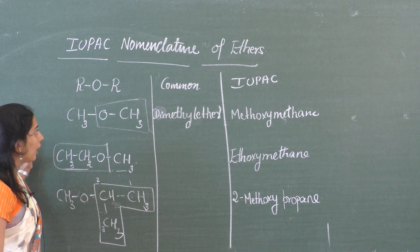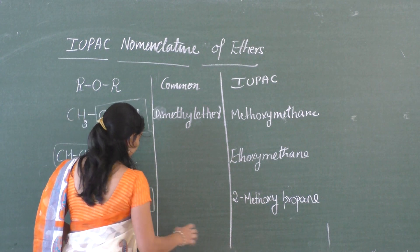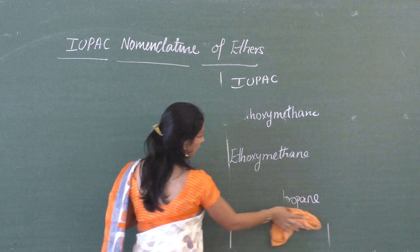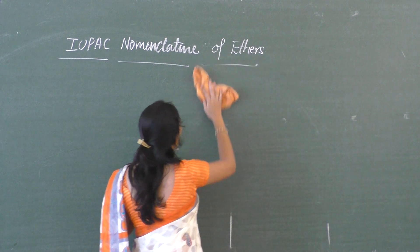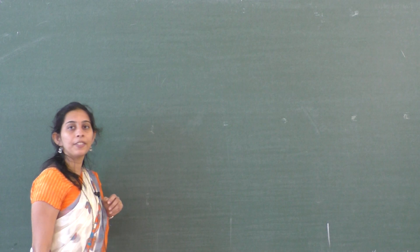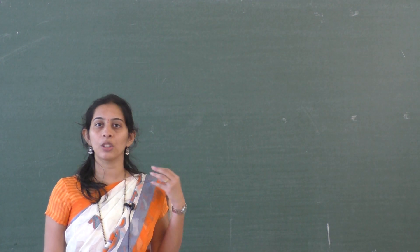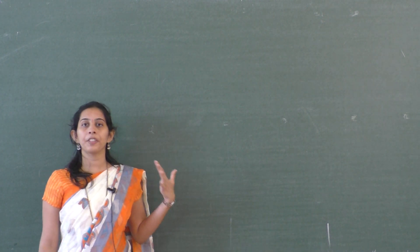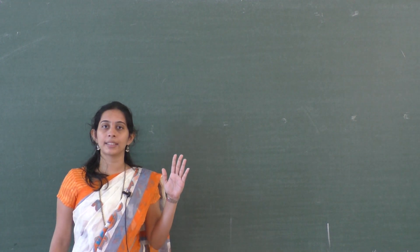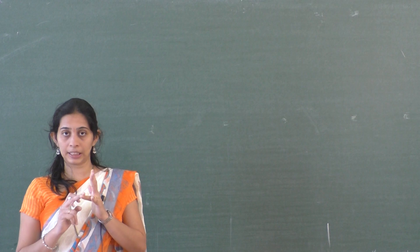This is how to name an organic compound which has ether as a functional group. Now we will move on to some physical properties and how they vary when you compare ether with other compounds. The physical property we focus on is boiling point. When comparing alcohol, ether, and alkane — for example, dimethyl ether — all three will have almost the same molar mass.